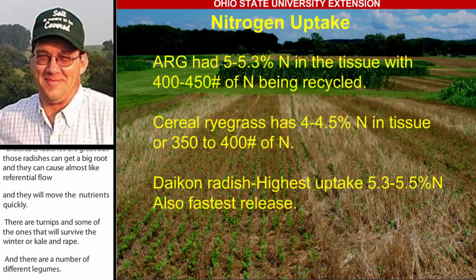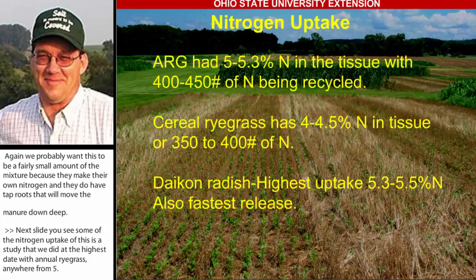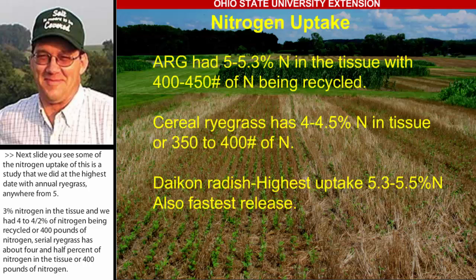Looking at nitrogen uptake data from a study we did at Ohio State: annual ryegrass had anywhere from 5 to 5.3 percent nitrogen in the tissue, with about 450 pounds of nitrogen being recycled. Cereal rye had 4 to 4.5 percent nitrogen in the tissue, or about 350 to 400 pounds of nitrogen. The Daikon radish had the highest uptake, but also the fastest release because it will decompose once it gets cold.